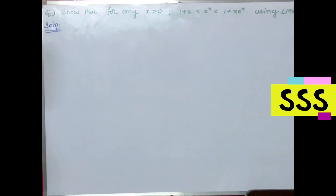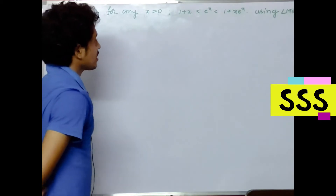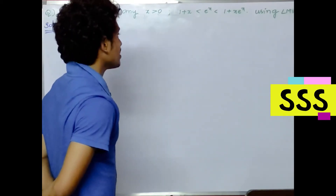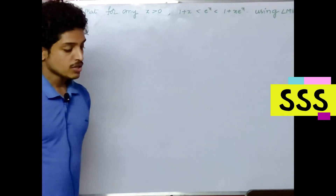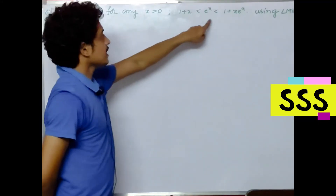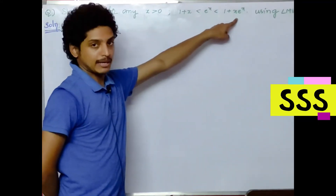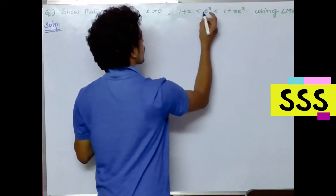Look at the question here. Show that for any x greater than 0: 1 plus x is less than e to the power x, which is less than 1 plus x into e to the power x, using Lagrange's Mean Value theorem. We have a function in e to the power x format.